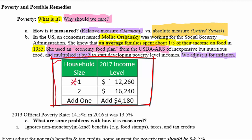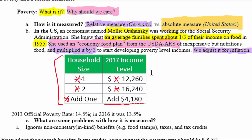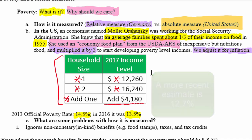If a household has only one person, the poverty threshold income is $12,260. For a household of two, the number is $16,240. For each additional person added to a household, the table adds approximately $4,180 that the household will need for food, clothing, and other basic needs. In 2013, the official poverty rate in the United States was 14.5%. By 2016, it had gone down to 13.5%, still declining after the recession of around 2007–2008.